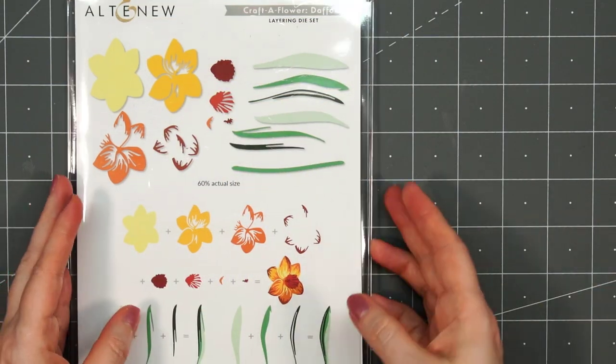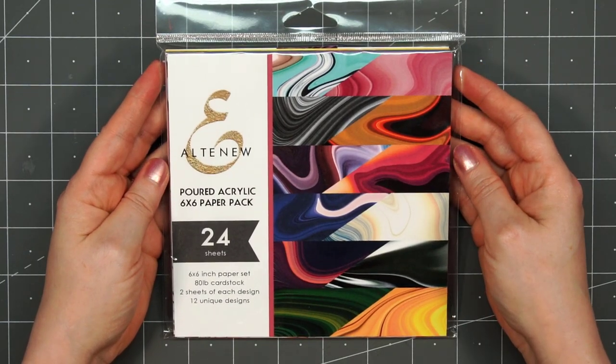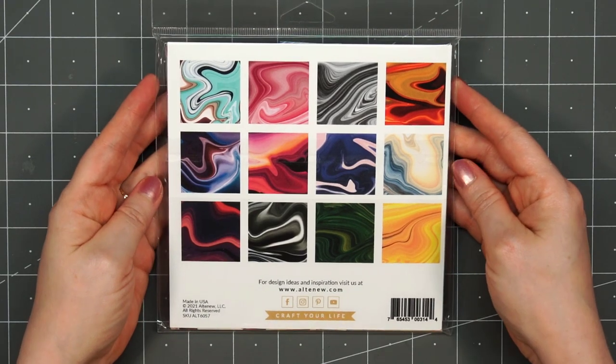I'll be making two different cards. For the first card I decided to use some pattern paper by Altenew. This is their poured acrylic 6x6 paper pack. Look at these designs, they're gorgeous.